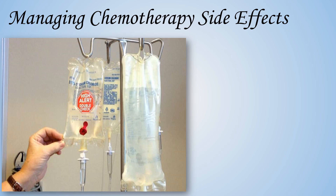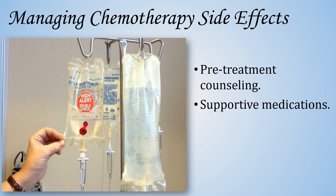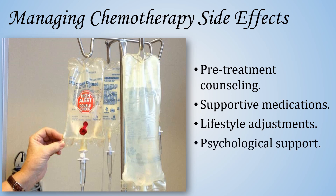Now let's look at how we can manage these side effects. Start with pre-treatment counseling — educating patients about what to expect can reduce anxiety and help them mentally prepare for the journey ahead. Next, supportive medications: antiemetics for nausea, growth factors like G-CSF to prevent neutropenia, and pain relievers for neuropathy can be game changers in maintaining treatment adherence. Encourage lifestyle adjustments — a well-balanced diet, adequate hydration, and proper rest are simple yet powerful tools in managing fatigue, mucositis, and overall recovery. Lastly, don't forget the psychological side — offer access to counseling services or support groups. Emotional strength is just as important as physical resilience during chemotherapy.